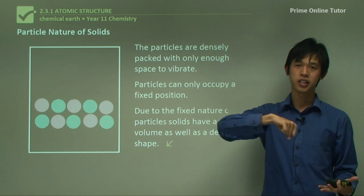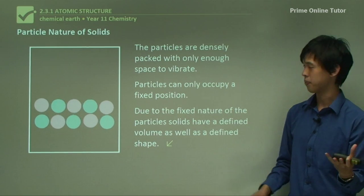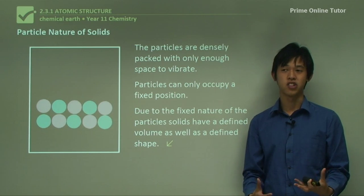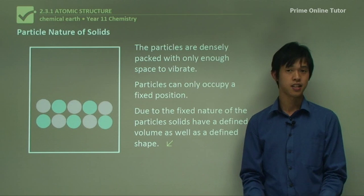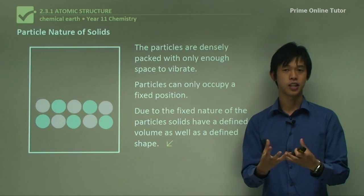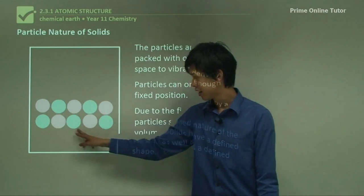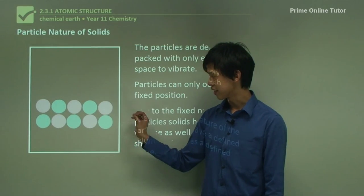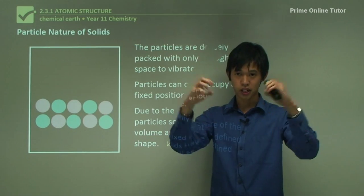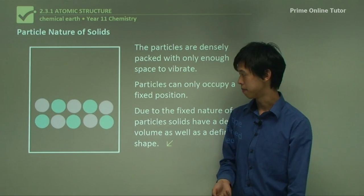Because each particle is stuck in one spot, that substance has a defined shape. If you pour a liquid into a teapot it takes the shape of the teapot, and a gas takes the shape of whatever container it's in — neither has a defined shape. But a solid has a shape defined by where the particles are. In the diagram you can see the ordered structure, and all that's happening is that the particles are expanding and contracting, just vibrating — opening up and closing. That's all that can happen in a solid because they're so tightly packed together.